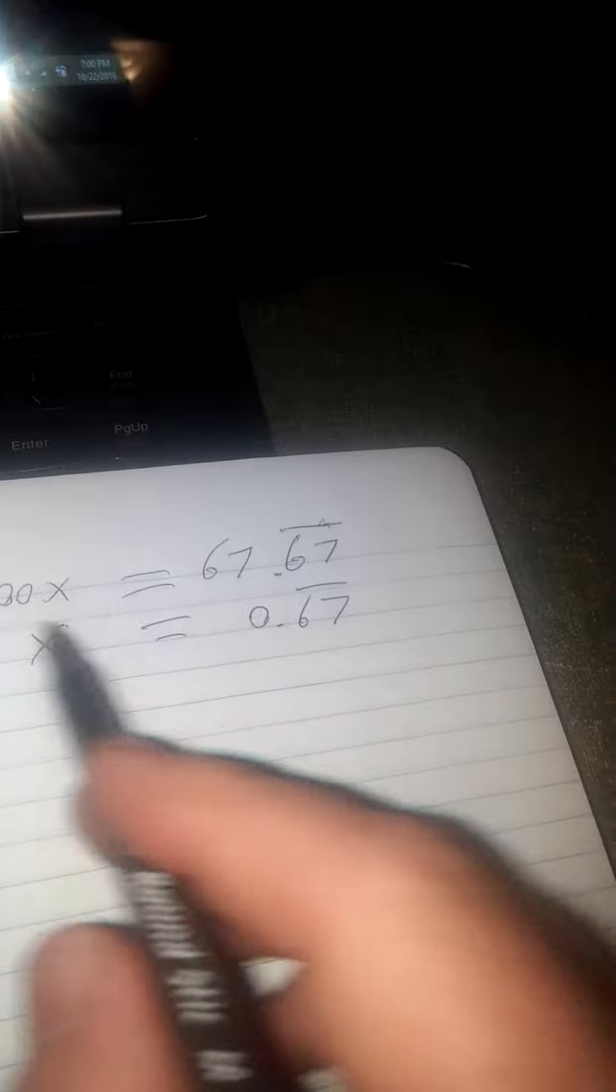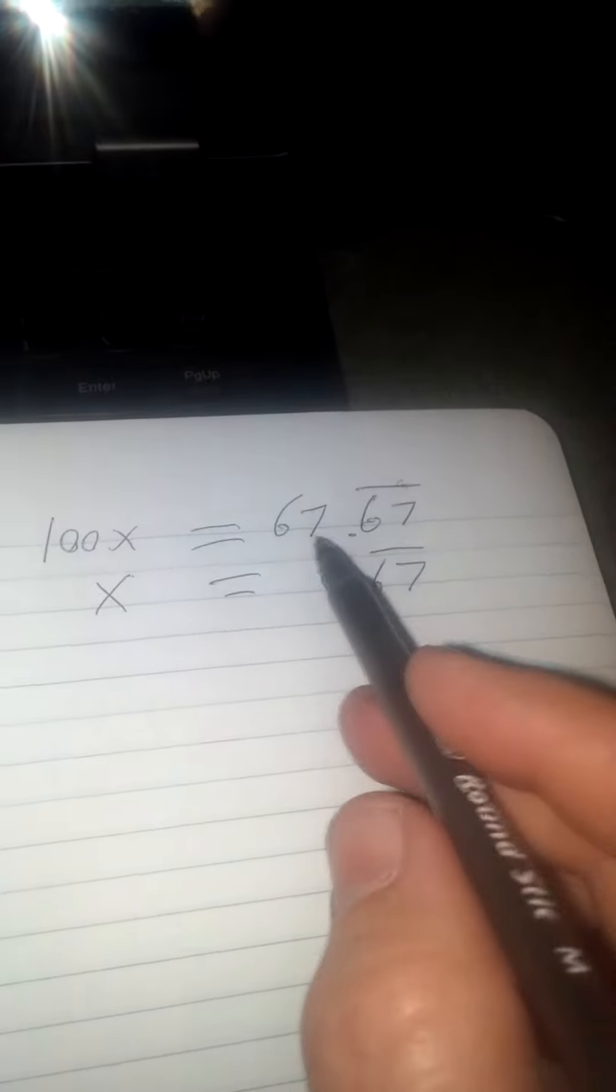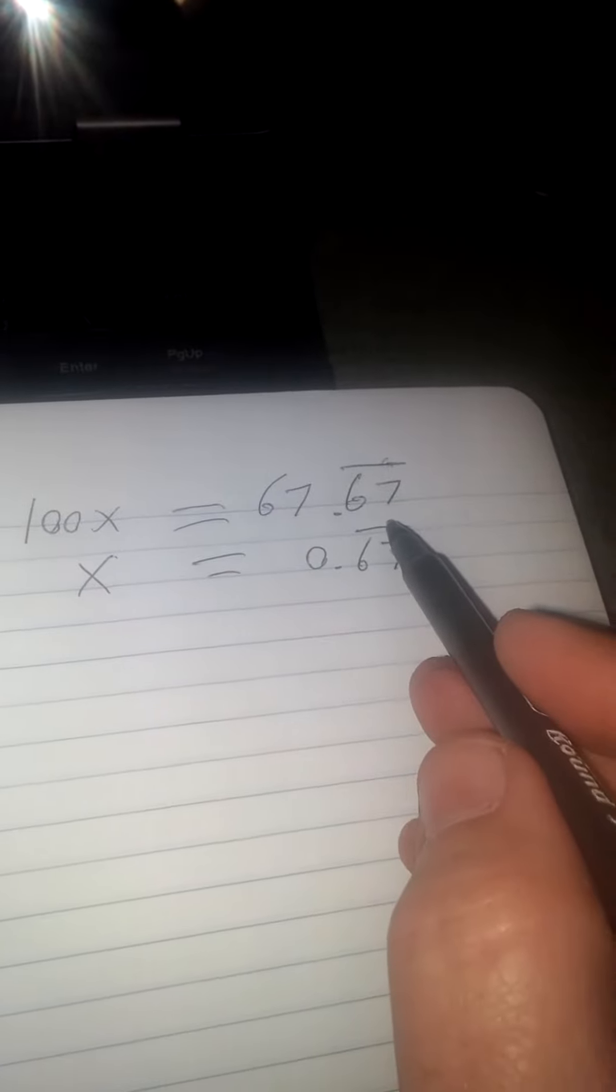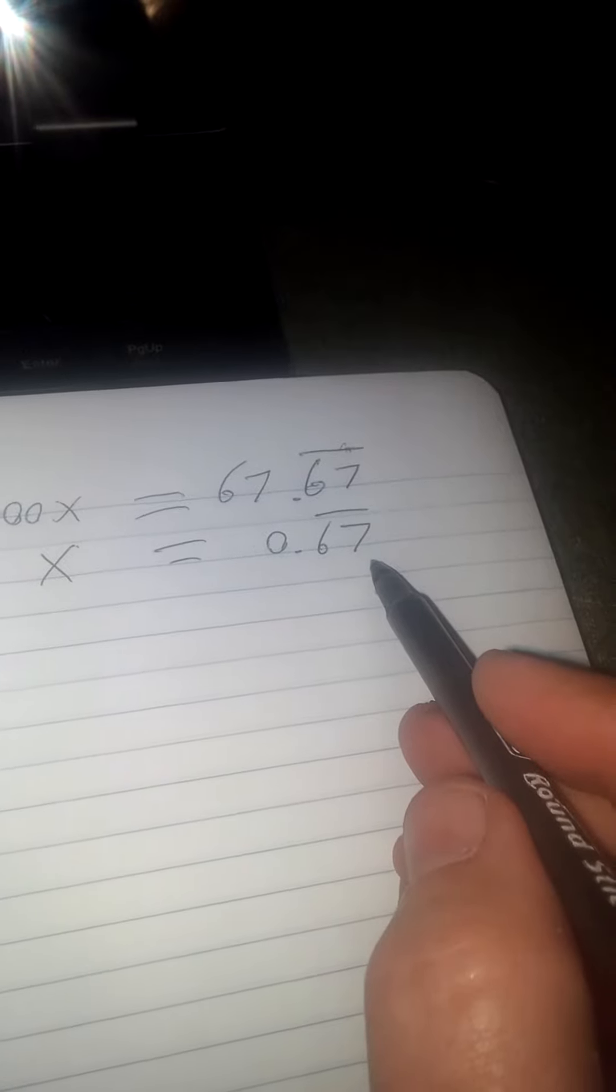100 times this will be 100x. So I've got 100x equals 67.67 repeating because I moved my decimal two places here for 0.67 repeating.